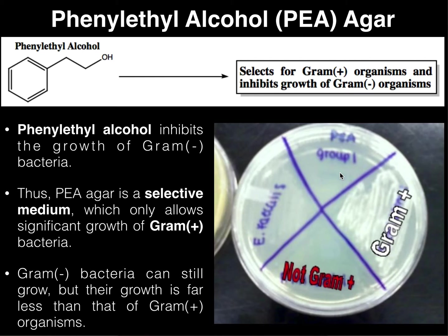As an aside, later in the semester when we get our unknown bacteria and have to identify them, we'll actually do three separate tests to confirm the gram reaction, since that's very important. Those three tests are: one, the gram stain itself, which also gives us cell shape; two, MacConkey agar, which is very reliable and gives us both the gram reaction and the lactose reaction; and three, PEA agar, which serves as a third form of confirmation — though it only gives you the gram reaction and nothing else.